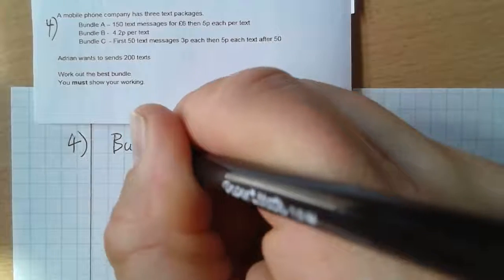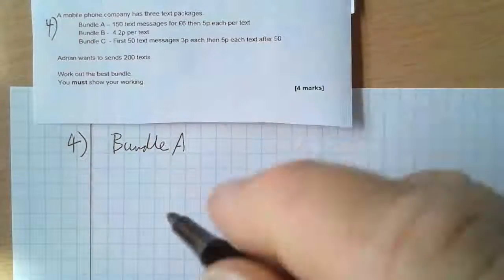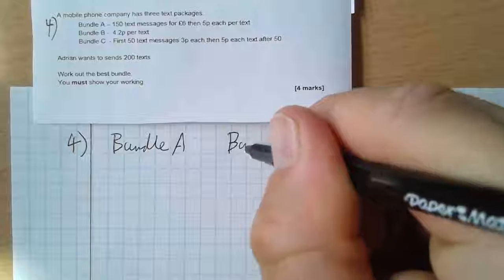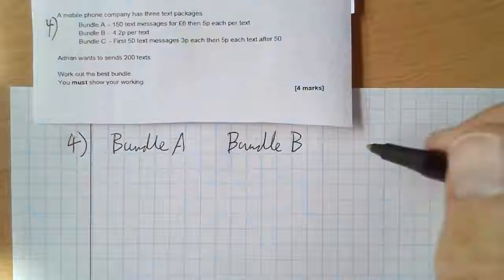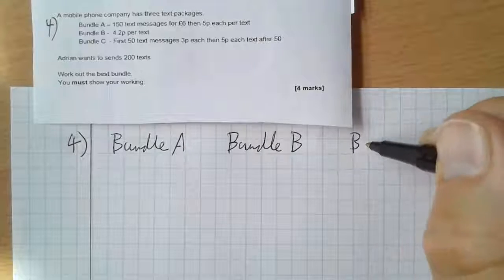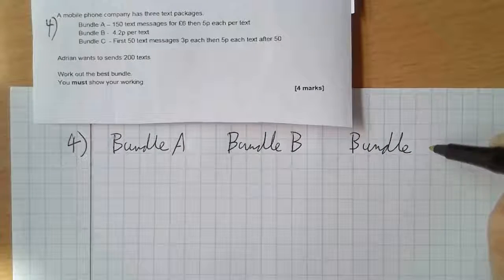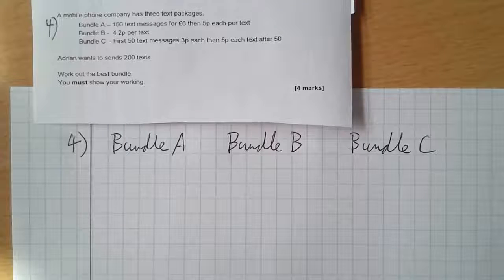Bundle A, which I'm gonna work out, Bundle B, which I'm gonna work out, and Bundle C, which I'm gonna work out. And then once I've worked them all out, I can say which one's the cheapest, so which one's the best bundle for 200 text messages.